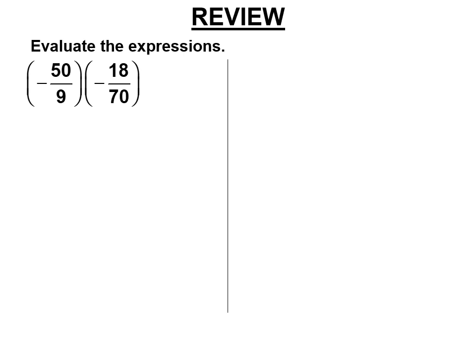So 2 negatives, the answer is going to be positive. That's negative 9 over 5 times negative 18 seventieths. I'm going to cancel these. They're both end in 0, so divide by 10. 9 and 18 are both divisible by 9. 9 divided by 9 is 1, 18 divided by 9 is 2. Now I'm going to multiply across. 5 times 2 is 10, and 1 times 7 is 7. 2 negatives make a positive. It's 10 sevenths. I might also be asked for the mixed number, 1 and 3 sevenths.